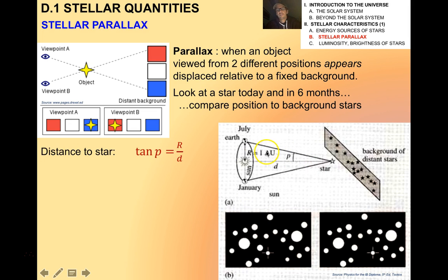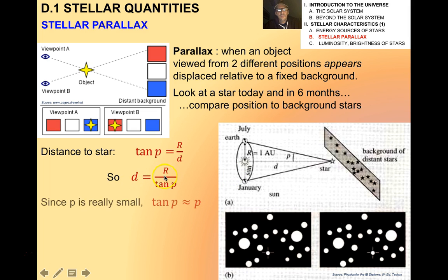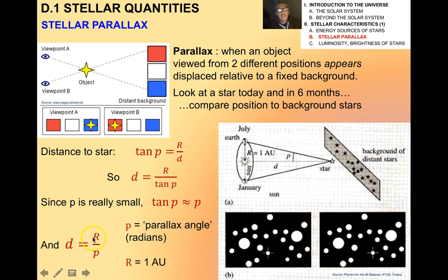In this diagram, which is greatly exaggerated, you see January and July. There's a distance between them equal to the diameter of the Earth's orbit. We have this angle P, and it turns out that the tangent of P is equal to R over D. So D is R over tangent P, but we use the small angle approximation and say that the tangent of P is approximately equal to P. Therefore D equals R over P, where P is the parallax angle in radians, and R is one astronomical unit — the radius of the Earth's orbit around the sun.